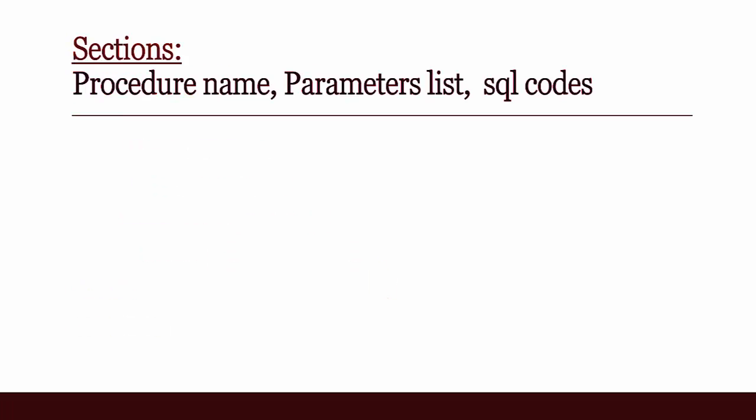There are three sections in a stored procedure: the procedure name, the parameter list, and the SQL codes.